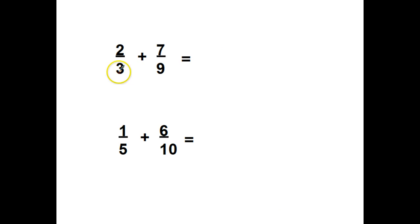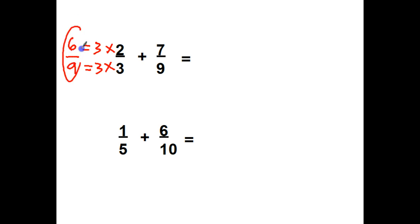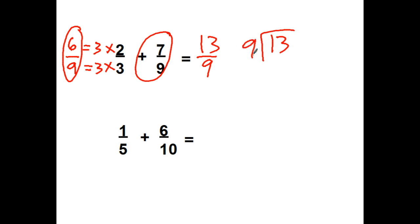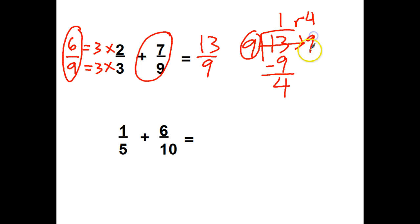Let's try a couple more out. Is there anything I can multiply 3 by to get to be a 9? Yes, I can take it times 3. If I'm taking the bottom times 3, I know I'm also going to take the top times 3. 3 times 3 is 9. 2 times 3 is 6. So now I have 6 ninths plus 7 ninths equals 13 ninths. Most of the time when we add fractions, we're going to end up with an improper fraction. 9 goes into 13 one time. I got 4 left over. Bring him over. My answer is 1 and 4 ninths.